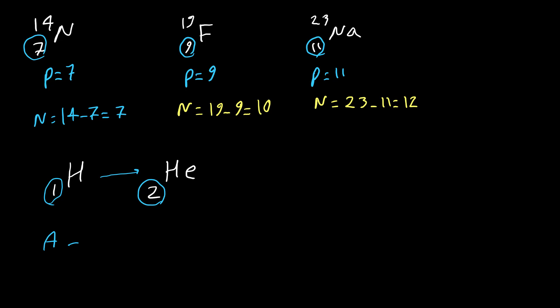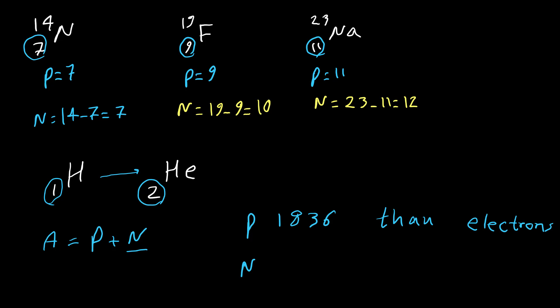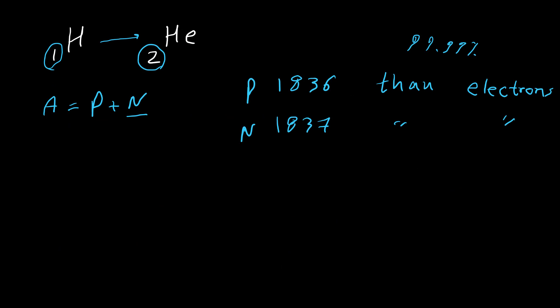The mass number A is the subtotal of protons and neutrons. Neutrons don't have any effect on the chemical properties of an element, so we call this subtotal the mass number. The mass of a proton is about 1836 times heavier than an electron, and a neutron is about 1837 times heavier than an electron. So the electron mass is almost negligible — more than 99.99% of the atom's mass belongs to protons and neutrons.